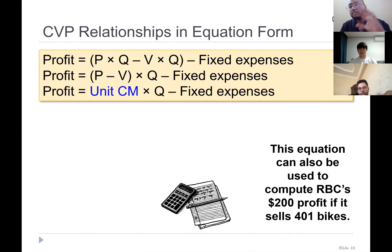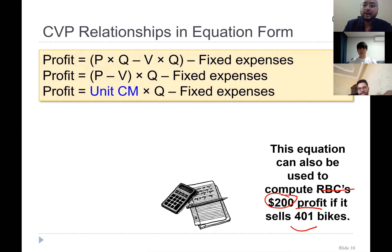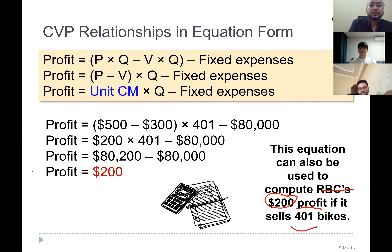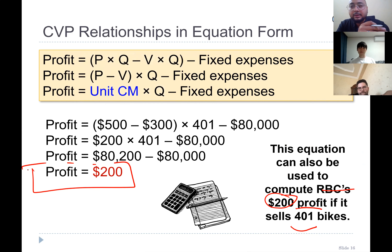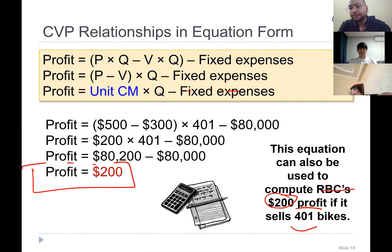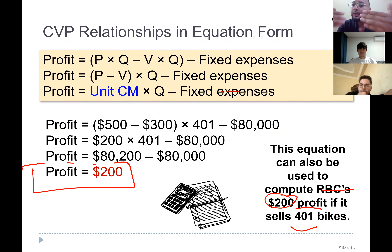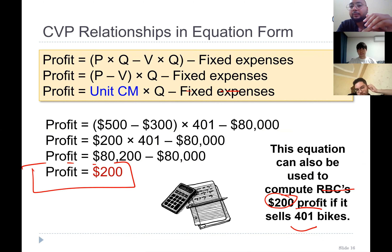This equation now fits our $200 profit of 401 bike sales. If you put the values here, the answer is verified — profit is $200. So we verified our equation that profit is equal to CM per unit multiplied by quantity minus fixed cost. Why did we not write the total fixed cost on a per-unit basis? Because we cannot rely on per-unit fixed cost — fixed costs remain the same in total.